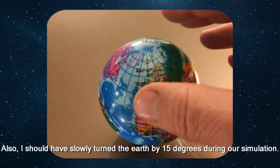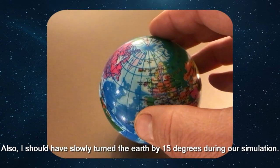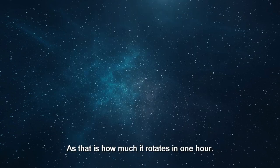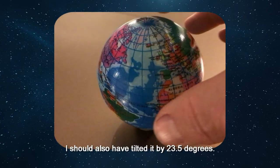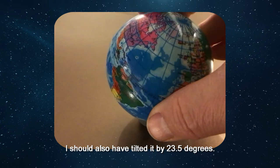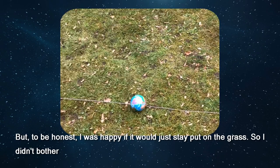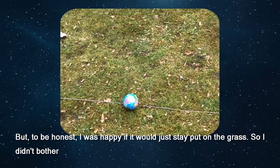Also, I should have slowly turned the Earth by 15 degrees during our simulation, as that is how much it rotates in one hour. I should also have tilted it by 23.5 degrees, but to be honest, I was happy if it would just stay put on the grass, so I didn't bother.